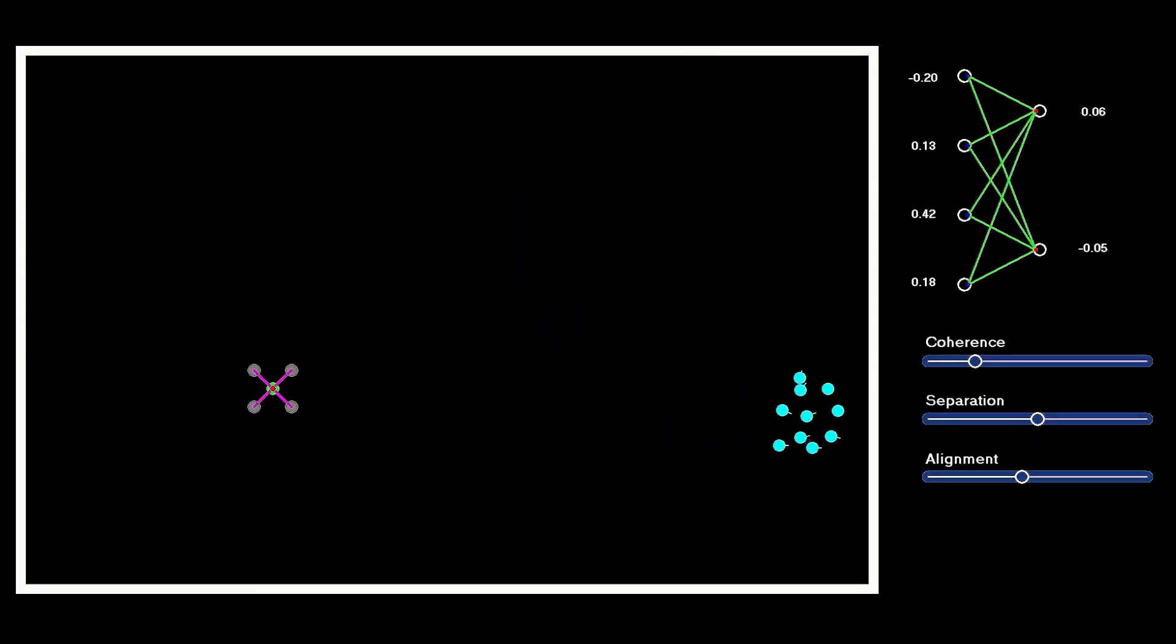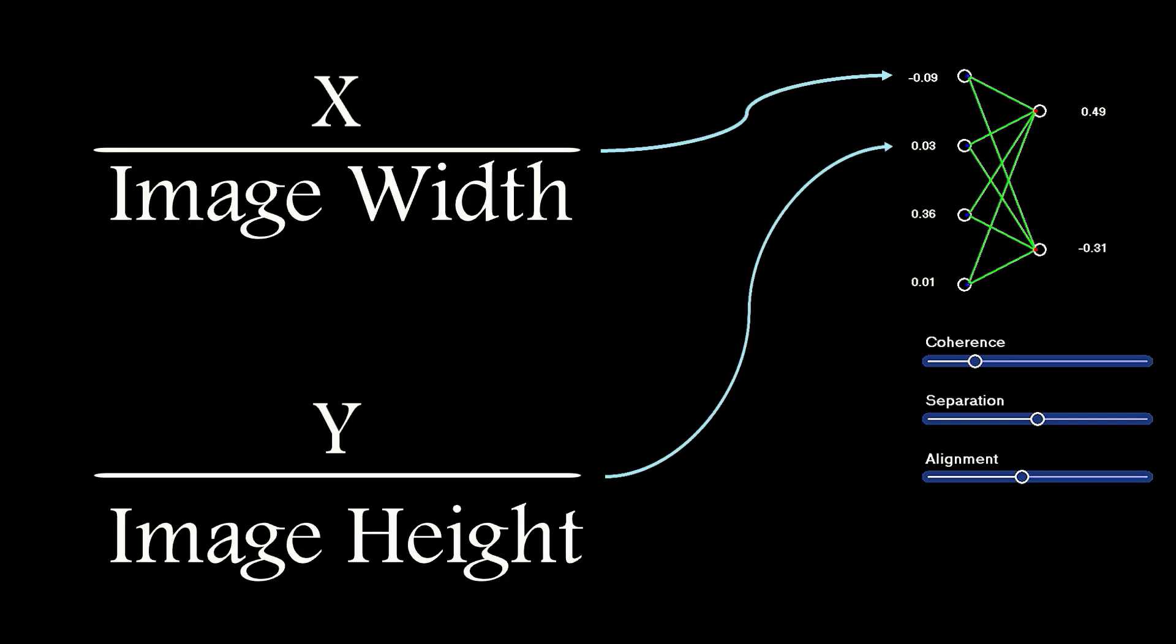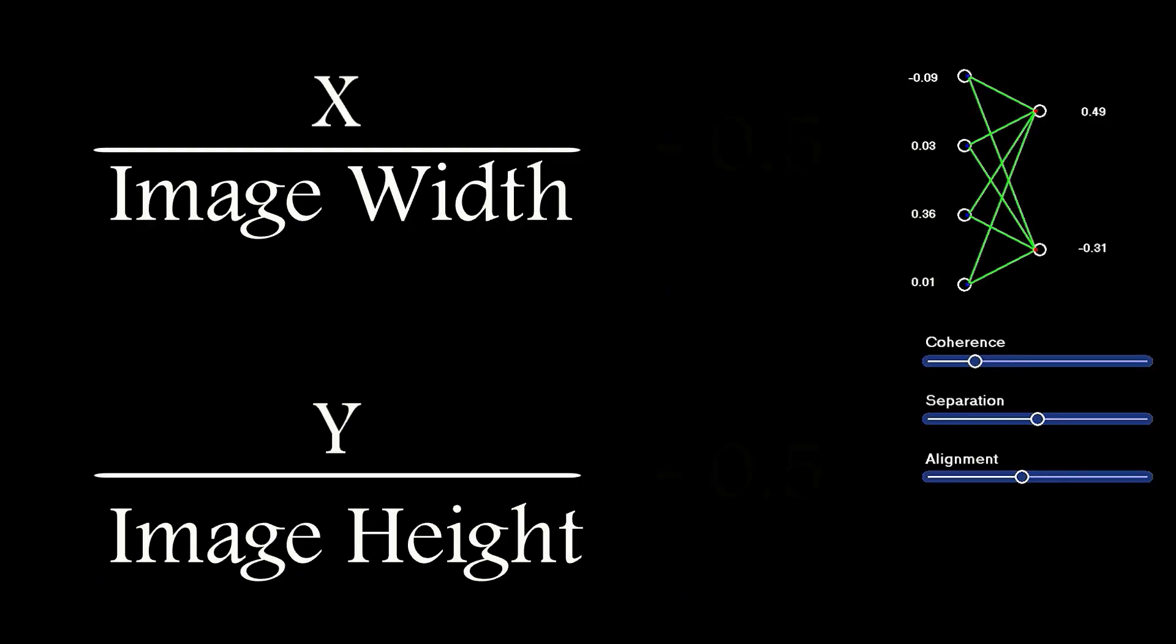So, for inputs to the network, I'll use the x and y coordinates of the drone, but I'll divide them by the screen width and height to give a value between 0 and 1. This is the same input used initially in the project which used neural networks to visualize the impact of adjusting the topology of a network. I projected that as an image, and subtracting 0.5 from the input value moves the input range to negative 0.5 to plus 0.5.